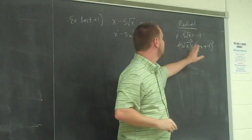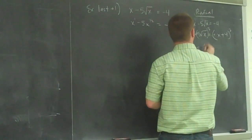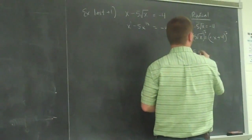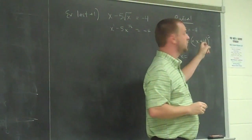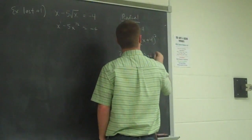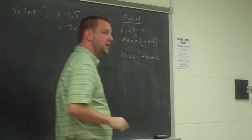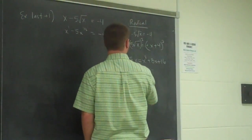On the left hand side, squaring the 5 gets me 25, and squaring the square root of x gets me x. And that equals over here, and I square, x squared. That's a quadratic equation that I should get in the standard form by subtracting off the 25x's.